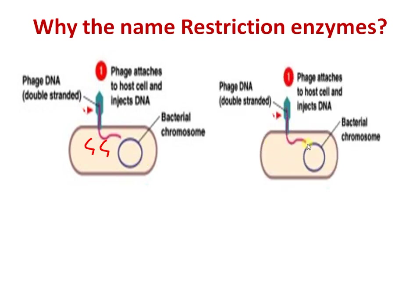Once the viral genome is inside the bacterium, the bacteria has an innate defense mechanism by which it will cleave this viral genome using an enzyme called a restriction enzyme. These restriction enzymes are a natural defense mechanism present in bacteria that restricts or prevents the replication of the viral genome inside the bacterium. Therefore, these enzymes are called restriction enzymes.